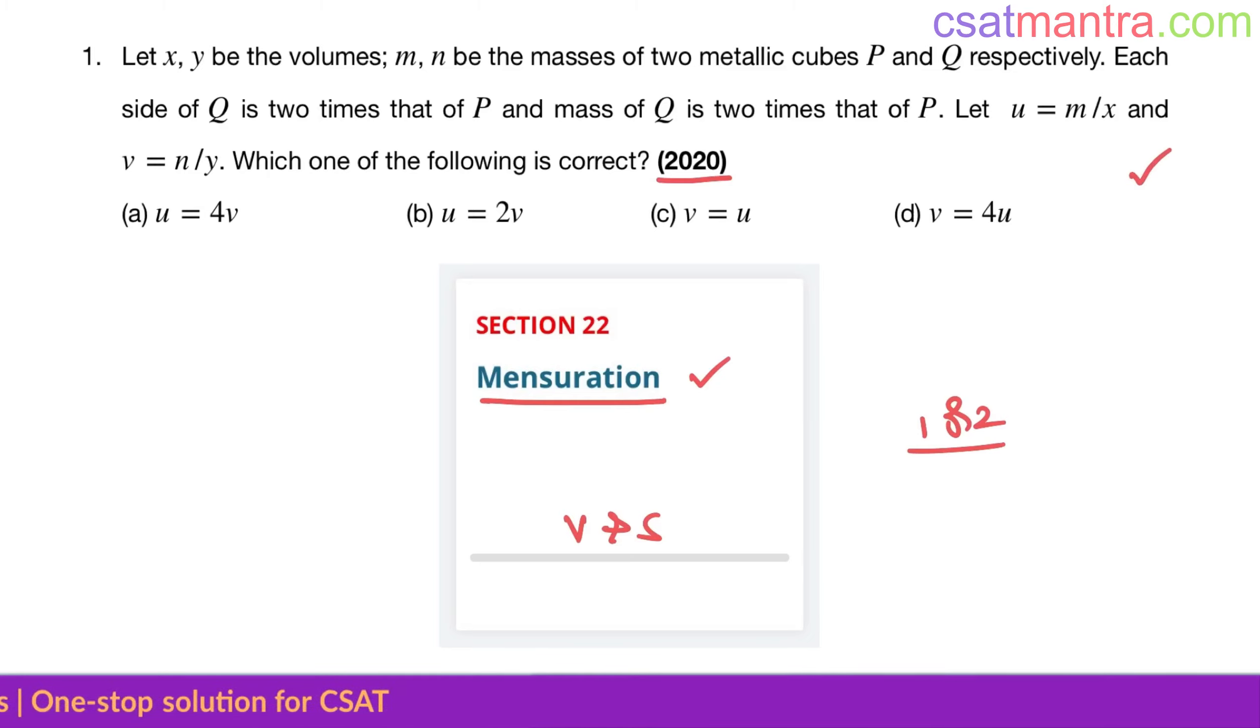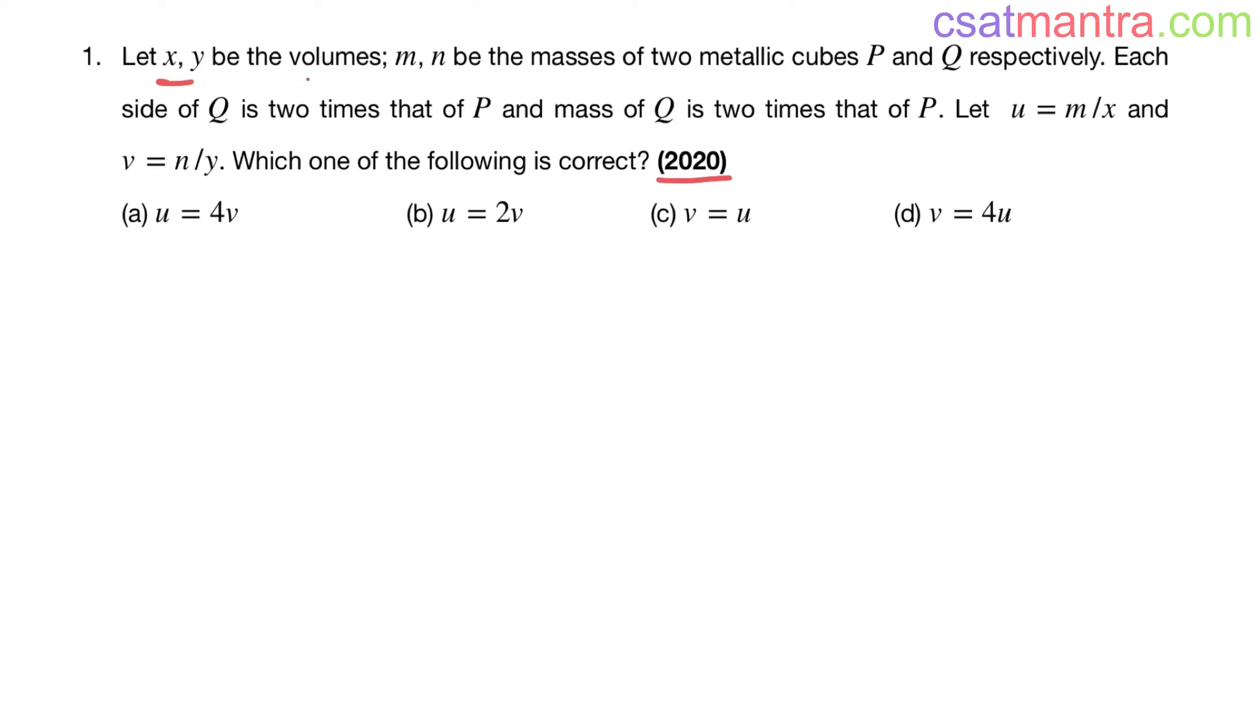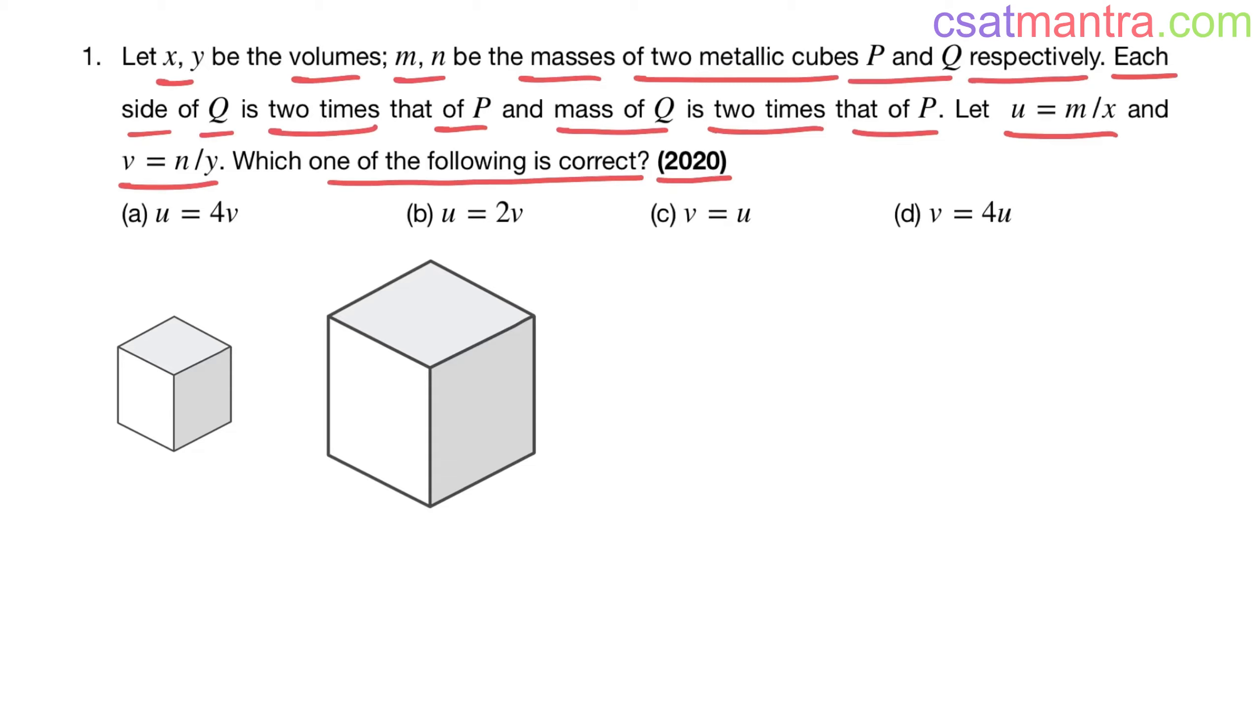This problem is very easy, but not sure how many non-math aspirants felt this problem difficult and left. Let x, y be the volumes, m, n be the masses of two metallic cubes P and Q respectively. Each side of Q is two times that of P and the mass of Q is two times that of P. Let u = m/x and v = n/y. Which one of the following is correct?